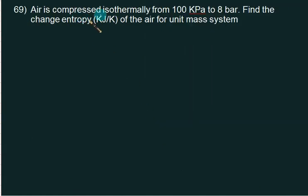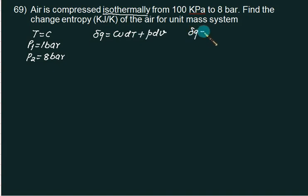Air is compressed isothermally. Isothermally means temperature equals to constant. From 100 kilopascal to 8 bar. So P1 is 1 bar and P2 is 8 bar. We know the data of P1, P2 and we want to calculate change in entropy. So we have del Q equal to CvdT plus PdV and second equation for del Q is CpdT minus VdP. Temperature is constant. So this is 0 and this one is 0. So you are free to use any equation. You can use this as well as you can use this. Advantage is here because we know the pressure limits. So I will continue this equation.